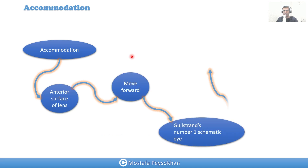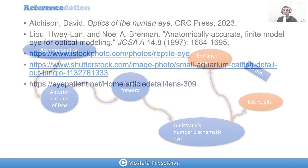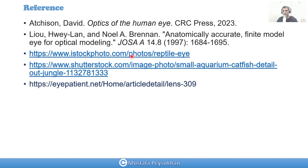During accommodation, the anterior surface of the lens moves forward. When this happens, both the entrance and exit pupil move forward by 0.4 millimeters, based on the number one schematic eye modeled by Goss Rand. So when we want to put those numbers into Zemax, we should take care of accommodation, which shifts the pupils by 0.4 mm. Those are the references I used for this presentation. Thanks for your attention.